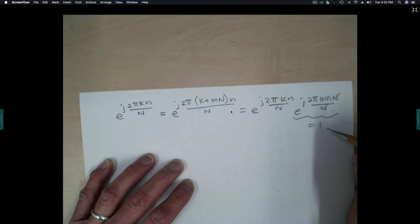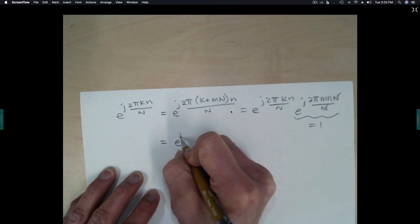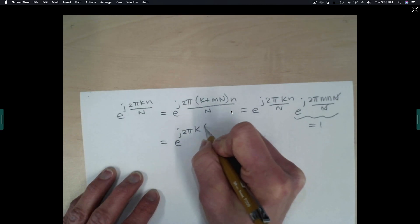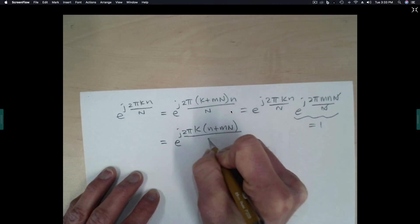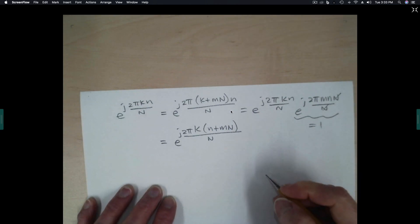Why is it 1? It's because when we cancel these capital N's, this is e to the j 2 pi times an integer, and that's equal to the real number 1. It's also, for the same reason, periodic in the n index. So we have k n plus m capital N.